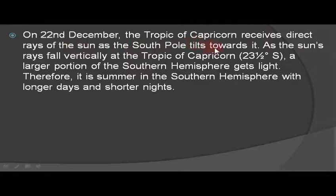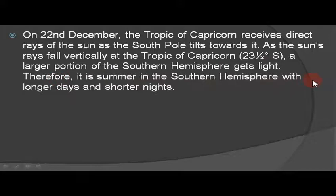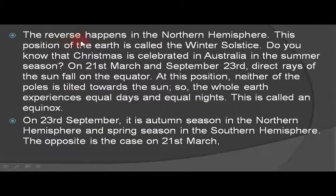On 22nd December, the Tropic of Capricorn at 23.5 degrees South receives direct rays of the sun as the South Pole tilts towards it. A larger portion of the Southern Hemisphere gets light, so it is summer in the Southern Hemisphere with longer days and shorter nights. The reverse happens in the Northern Hemisphere. This position of the earth is called the winter solstice.